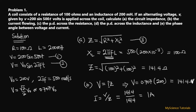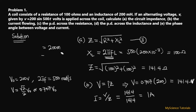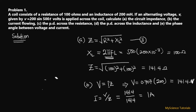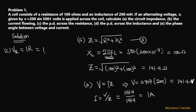The next thing is part (c): the potential difference across the resistance, and (d) the potential difference across the inductor. The potential difference across the resistor is VR = IR = 1 × 100 = 100 volts.